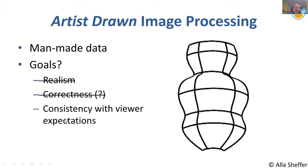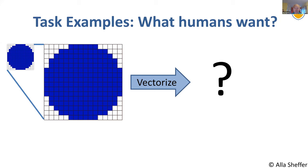So here are some examples of tasks where we want to say, what do humans want? Here is a raster input image. Here is a zoom on that raster. And if we want to vectorize it, probably in your head, you can imagine what the vector output of this task would look like.